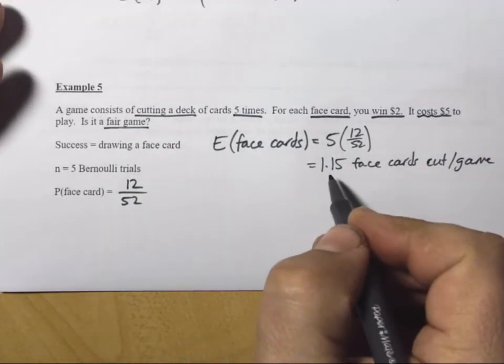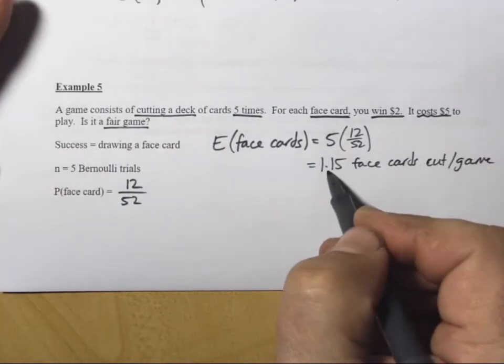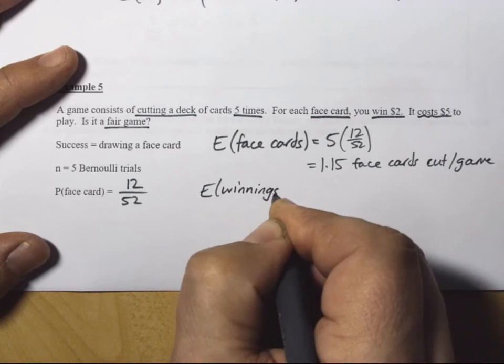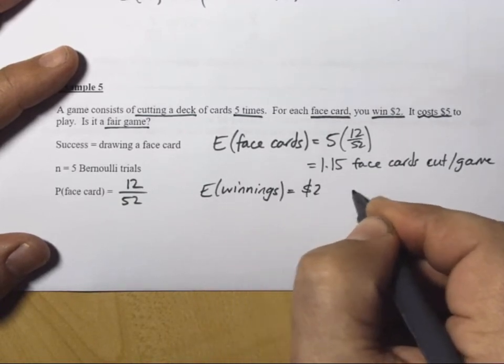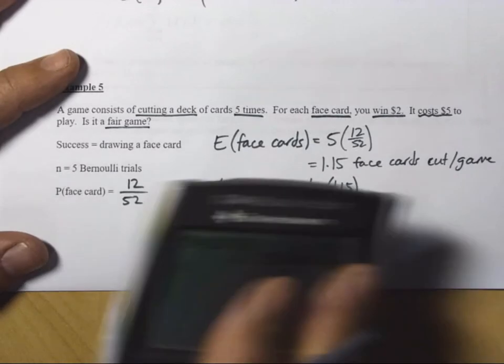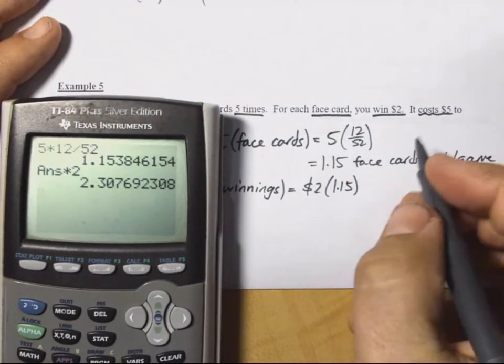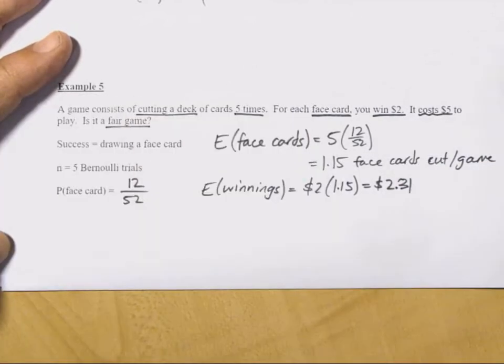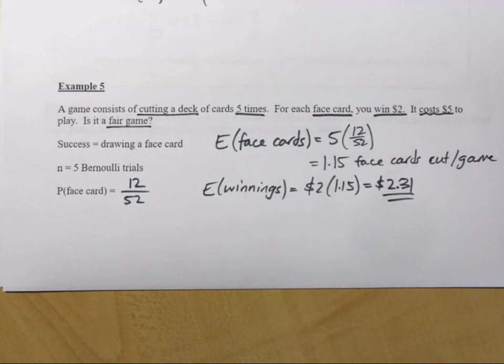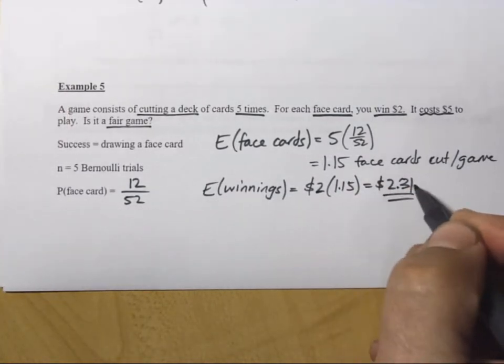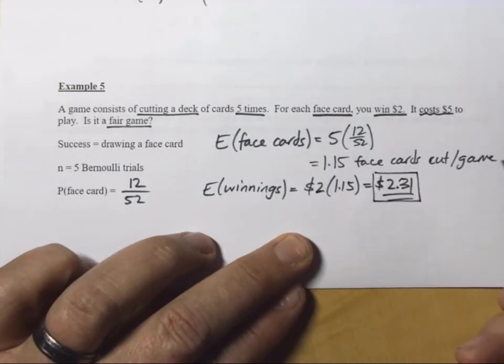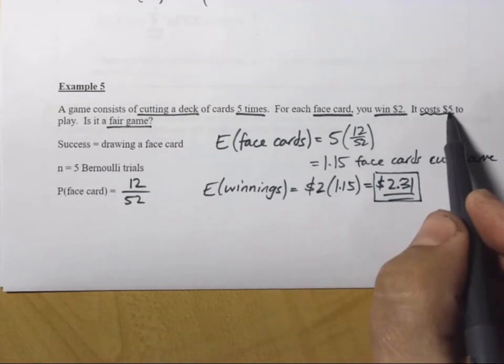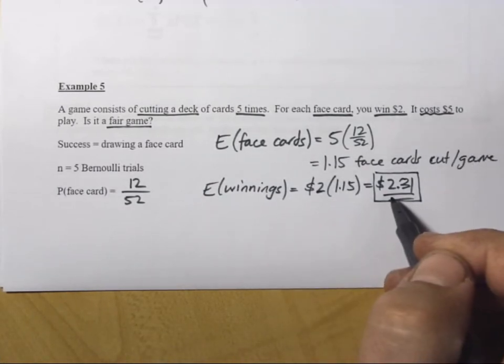Well, that's great, but we're making $2 every time we do this. So, expected winnings then, based on what I just figured out, is $2 for every 1.15 face cards. That times 2 is equal to approximately $2.31 rounded. Well, if as a player, now that I've calculated this, as a player, if I'm making $2.31 every time I cut the deck 5 times, and I'm paying $5 to play, well then this is definitely not a fair game.